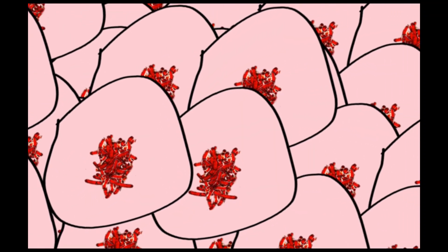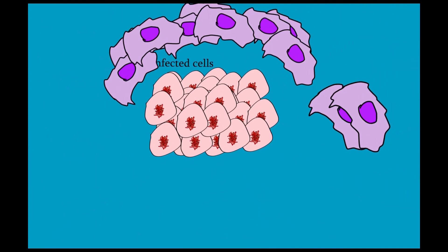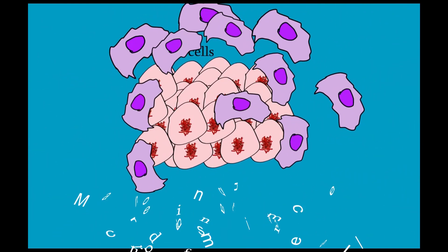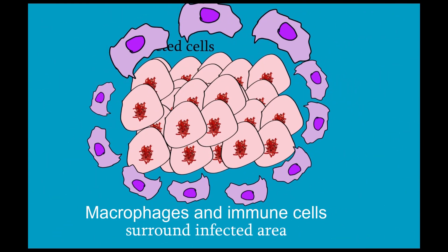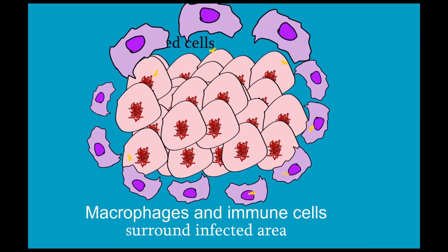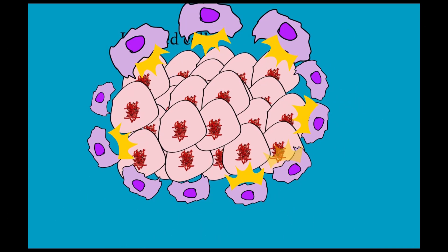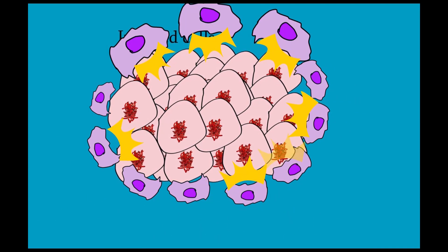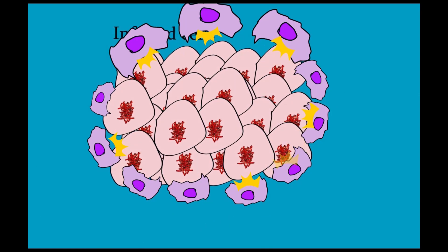The body's immune system tries to protect itself against infection. Macrophages and immune cells surround the infected area. As macrophages release enzymes that digest cells, the infected cells begin to die.